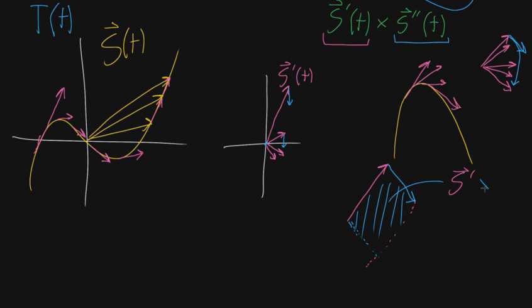The cross product between s prime and s double prime. So this cross product, by giving you that area, is kind of a measure of just how perpendicular these vectors are, right?